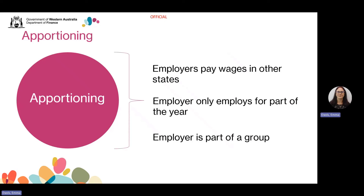The deductible amount is affected by the diminishing threshold for employers who pay between $1 million and $7.5 million. There are a couple of other things that affect the deductible amount. Employers who pay wages in other states or territories will get an apportioned deductible amount relative to the wages they pay in Western Australia. Employers who only employ for part of a year will get an apportioned deductible amount relative to the time they employ for. Employers who are part of a group will also be affected by apportioning, so the designated group employer gets the threshold and any remainder is apportioned among the other group members.